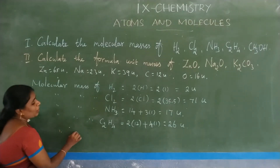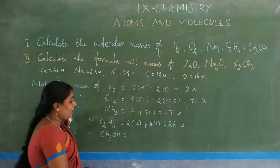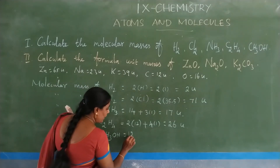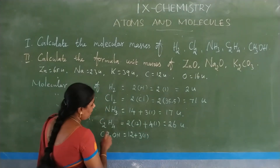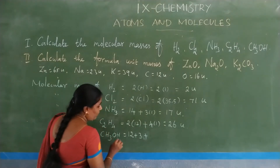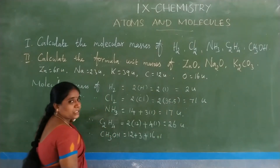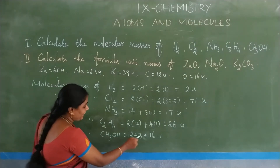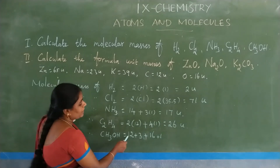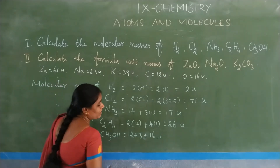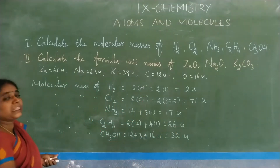Finally, molecular mass of CH3OH (methanol). 1 carbon = 12. 3 hydrogen = 3 × 1 = 3. 1 oxygen = 16. 1 hydrogen (from OH) = 1. Total = 12 + 3 + 16 + 1 = 32 unified mass. So the molecular mass of methanol is 32 unified mass.